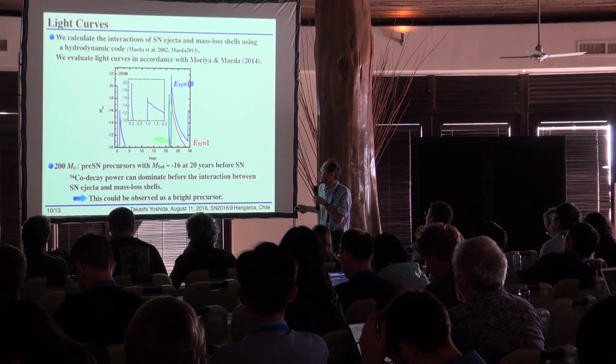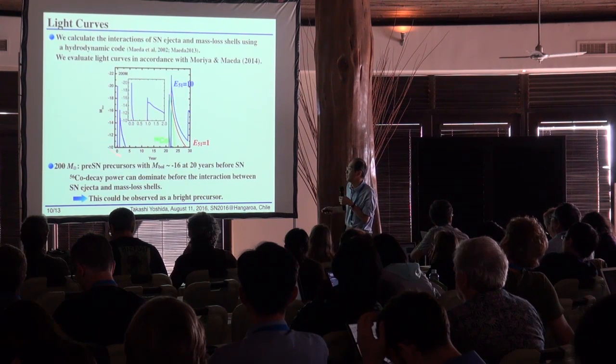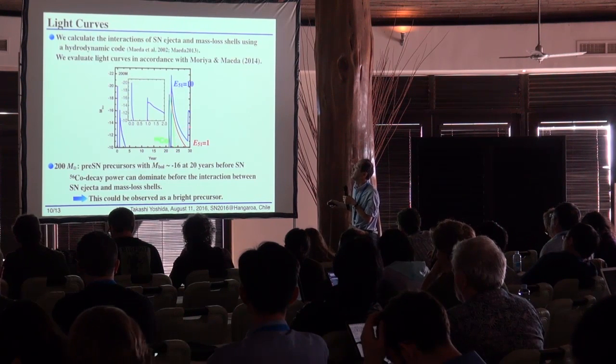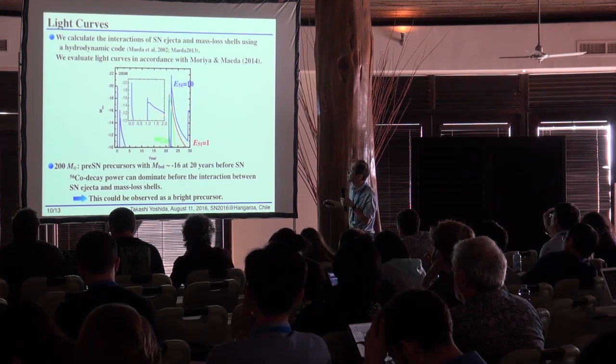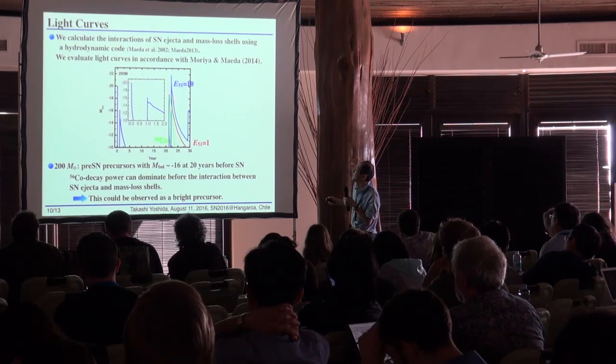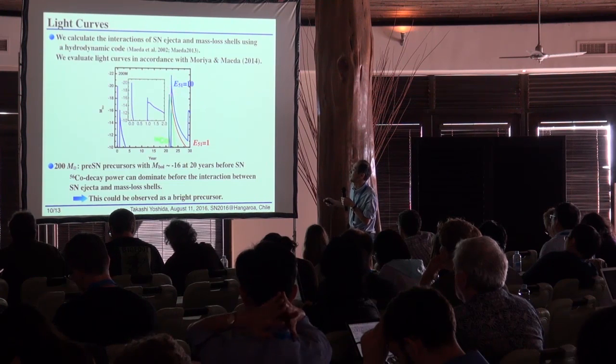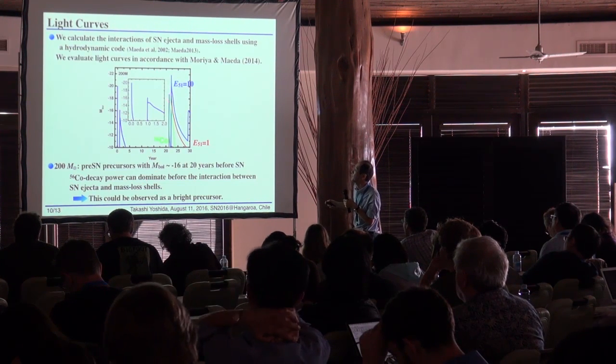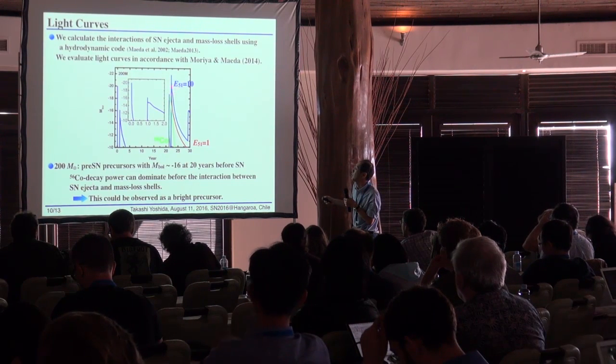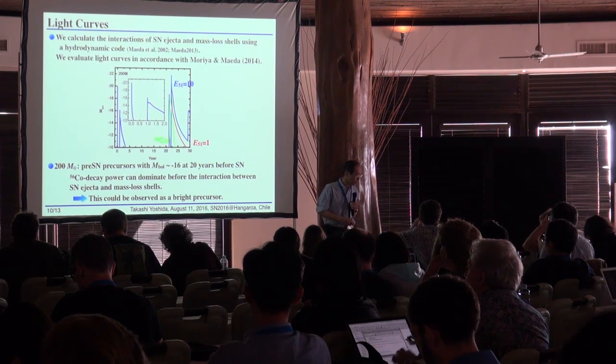I will show the luminous transient models. Twenty years before the explosion, the magnitude is about minus 20. In that case, nickel-56 decays before the luminosity event.